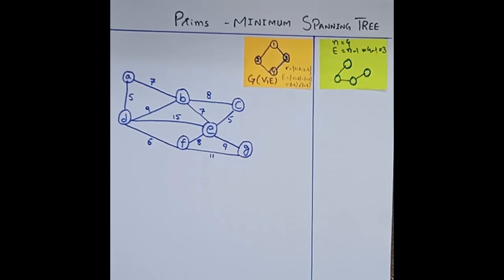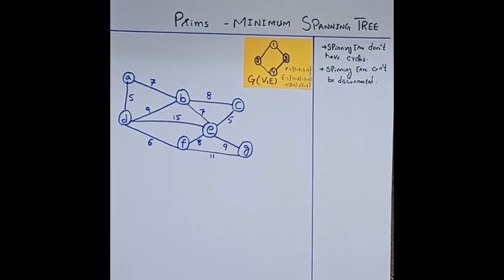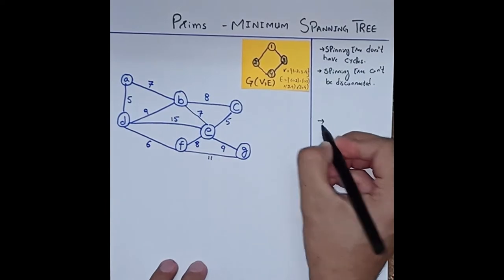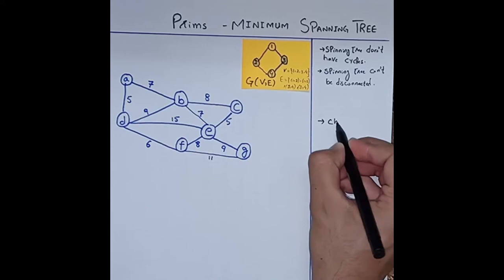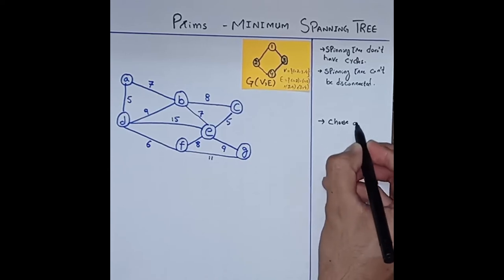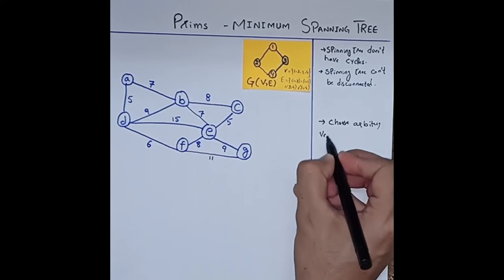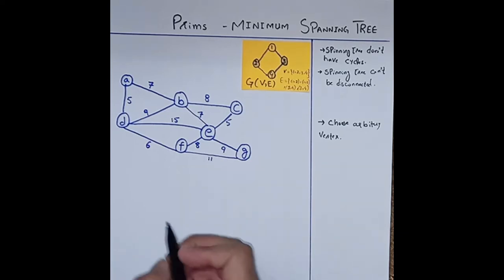Through this example, using Prim's method, we will construct a minimum spanning tree. To construct a spanning tree using Prim's algorithm, first we choose an arbitrary vertex. For example, in this example I choose the arbitrary vertex that is A, so we start from A.